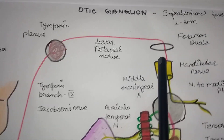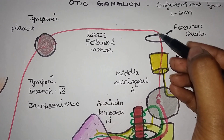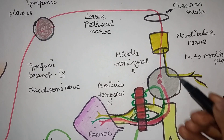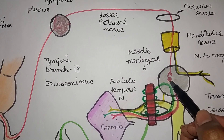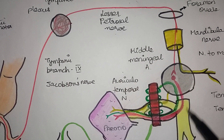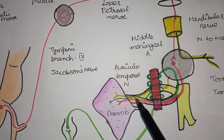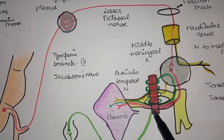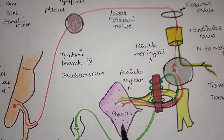The lesser petrosal nerve passes through the foramen ovale and comes back to the otic ganglion, bringing parasympathetic fibers to the mandibular nerve. It forms a relay on the otic ganglion — these are the pre-ganglionic fibers. The post-ganglionic parasympathetic fibers then pass via the mandibular nerve through the auriculotemporal nerve, looping around the middle meningeal artery, and go on to supply the parotid gland.